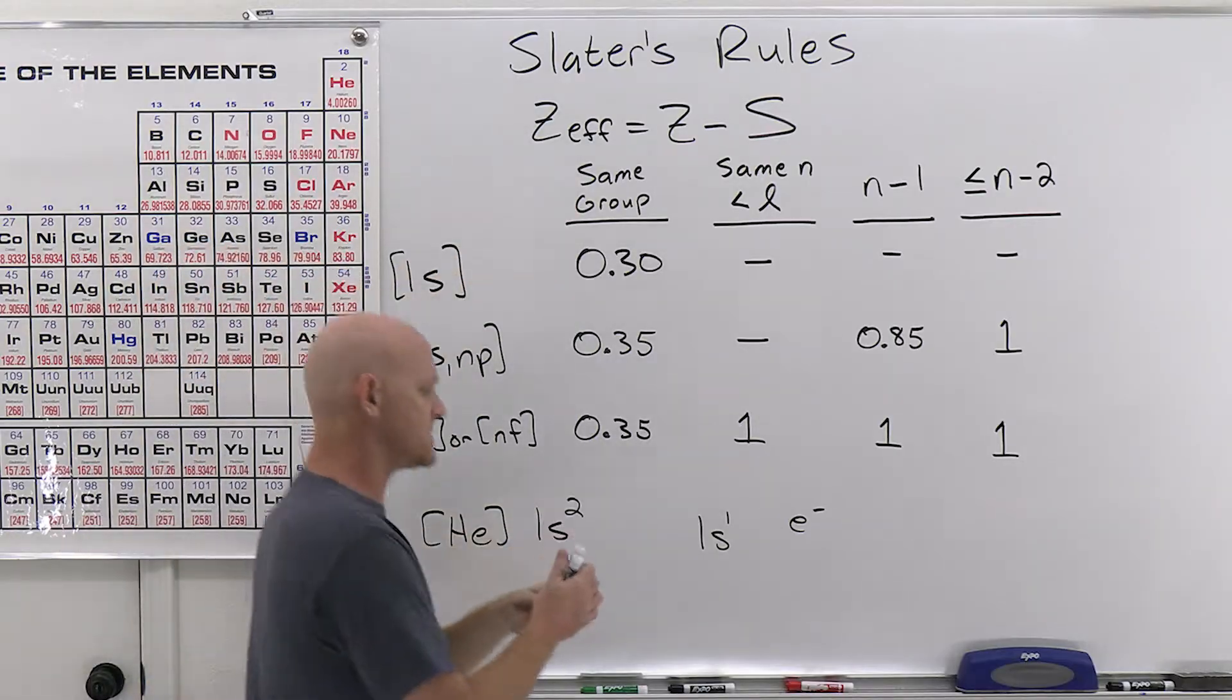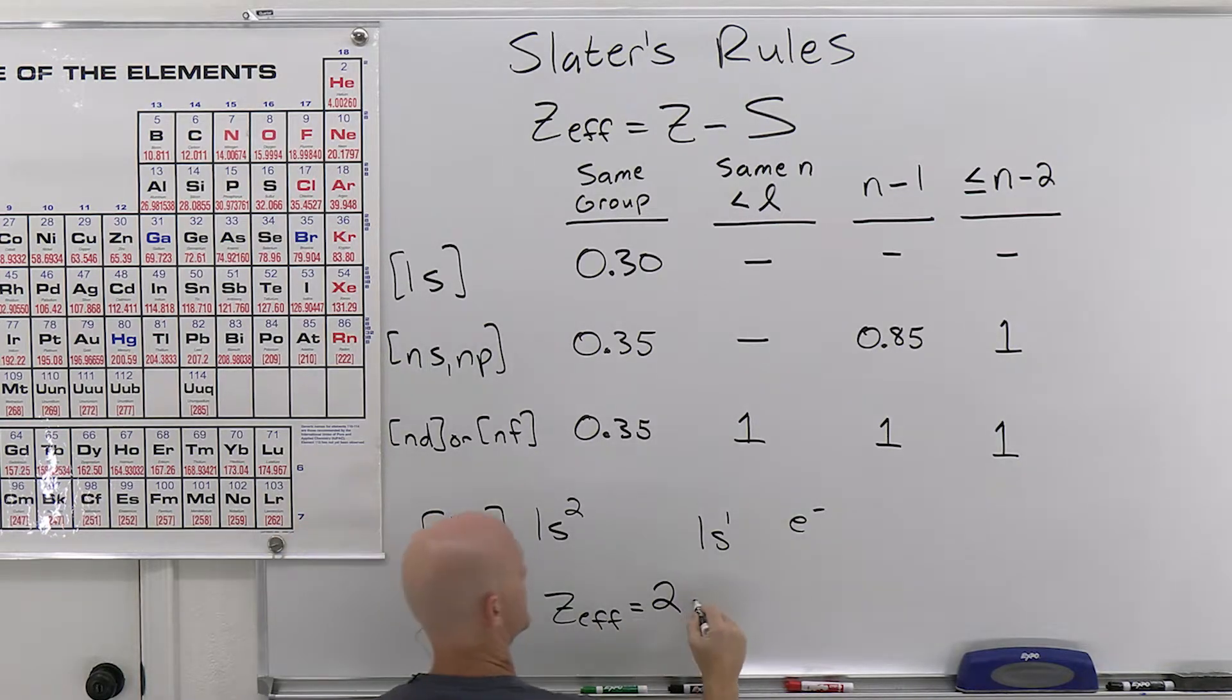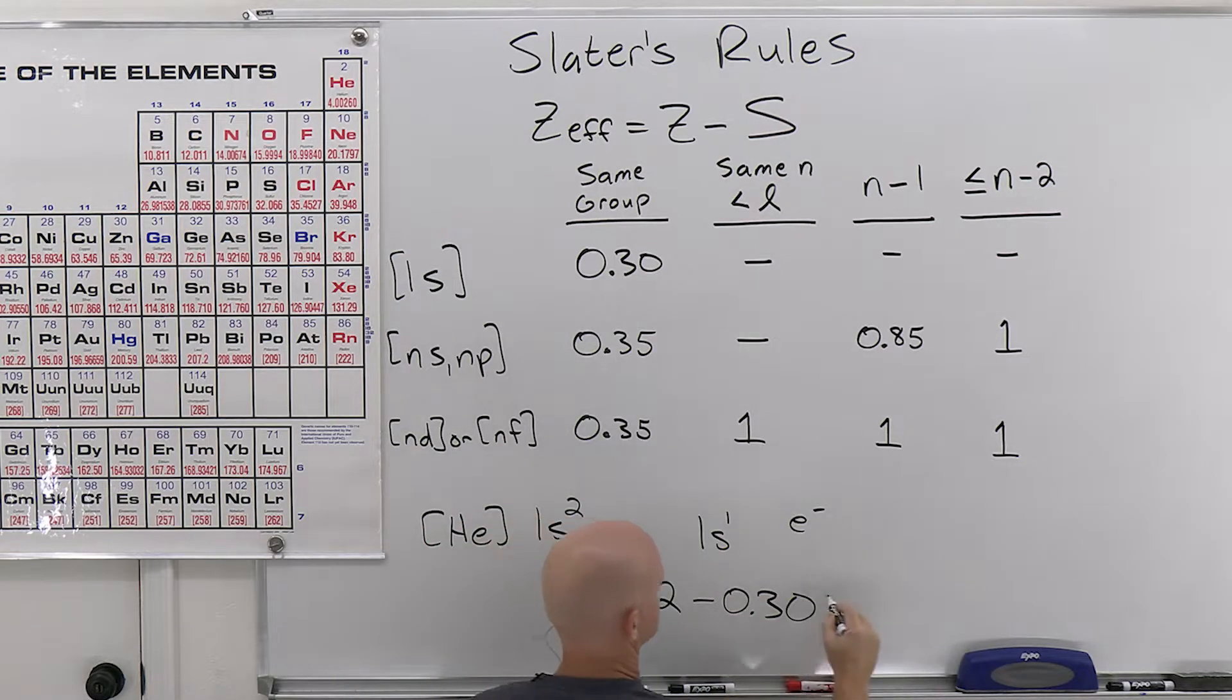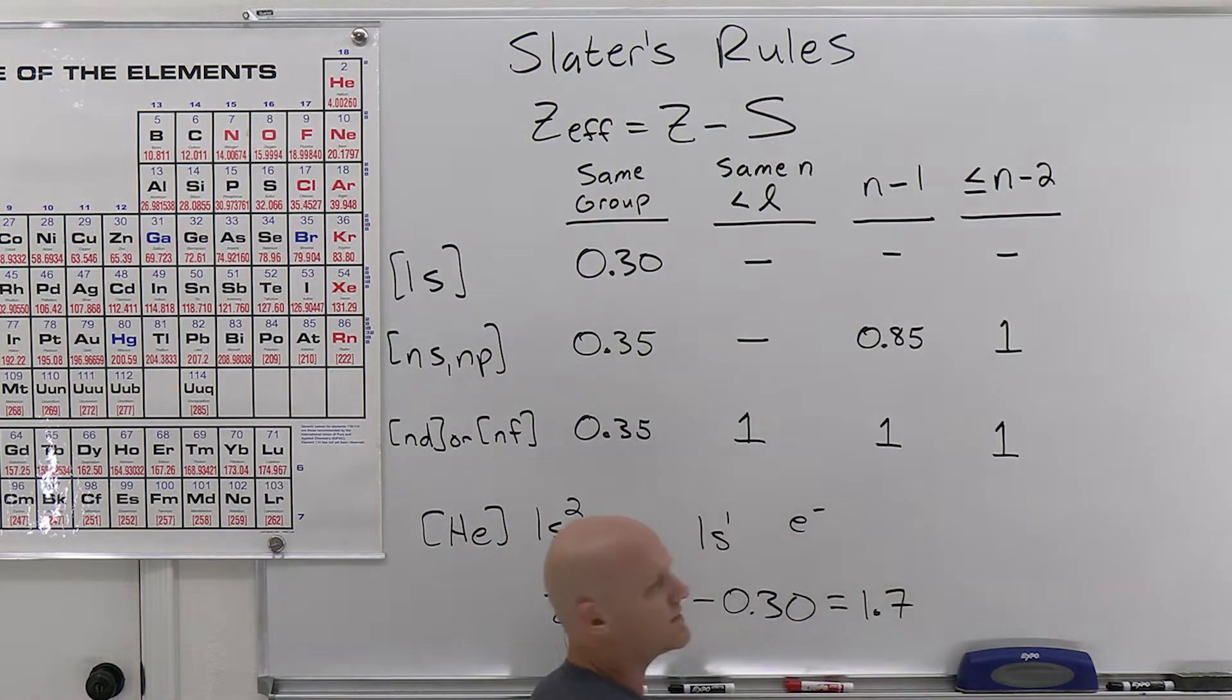And it's going to have a screening value of 0.3. And so for helium here, when we do Z effective equals Z minus S, the Z again is 2, number of protons in the nucleus. And then minus S, we really just have that total of 0.3, just that one electron. And we're going to get an effective nuclear charge, therefore, of 1.7.